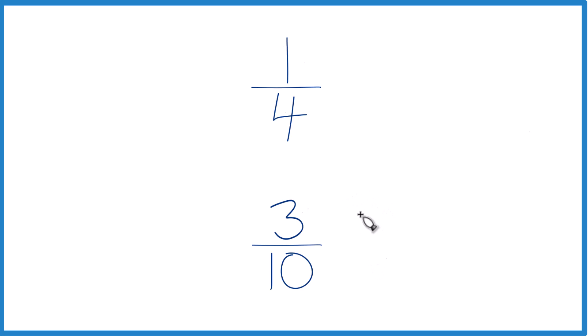The other way to do it is find a common denominator, something that both of these numbers go into evenly. Once we have a common denominator, we can just compare the numerators. So I know that four and ten, they both go into twenty evenly.